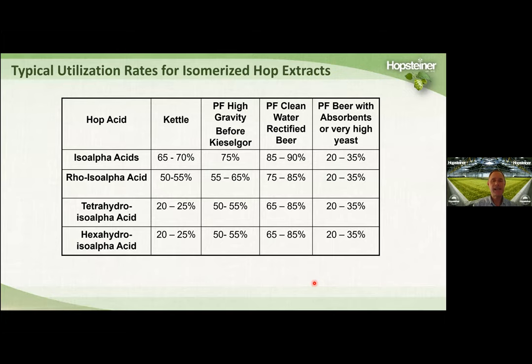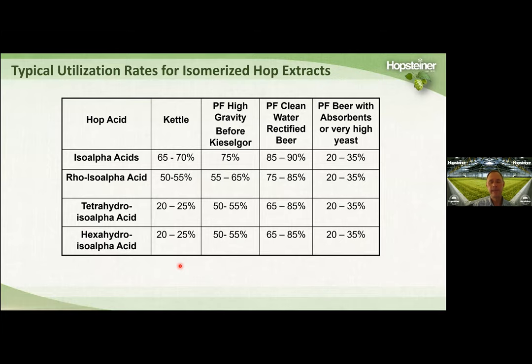Often brewers tell me they can't do exactly what I recommend. A lot of brewers add these products to the kettle because they just don't want to mess around with post-fermentation hopping. If you do, these are the kinds of utilizations you can expect: 65 to 70% for ISO, 50 to 55% for rho, 20 to 25% for Tetra, and 20 to 25% for hexa.